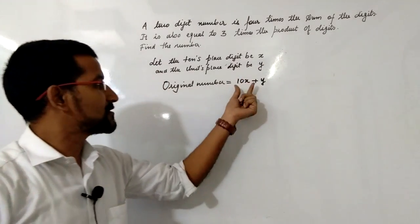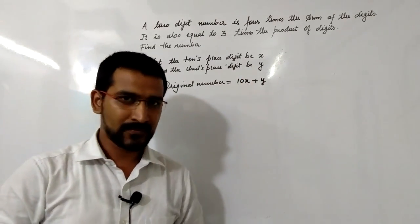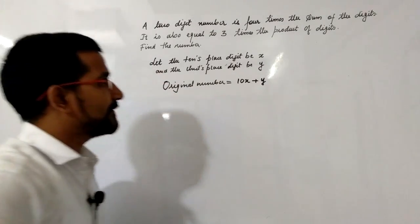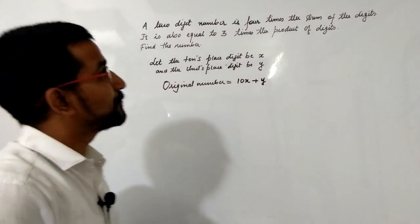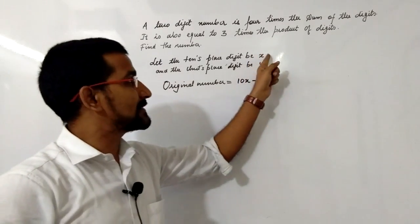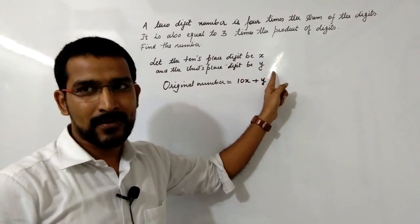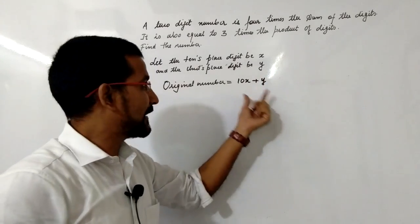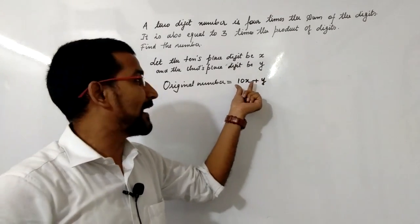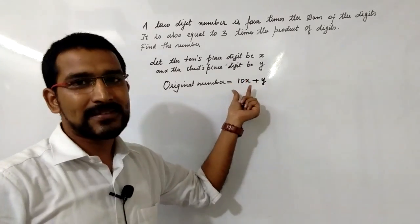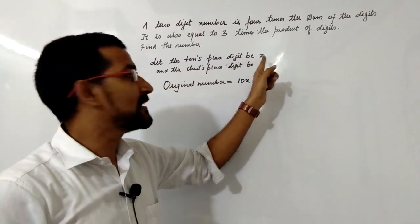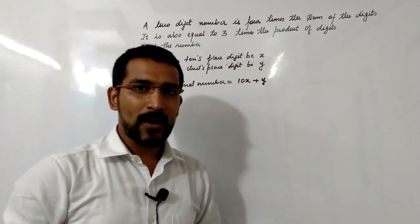So x and y are tens and units digits, giving us 10x + y. Now, many students think that 10x is a digit — no, 10x is not a digit, that is the value. 10 times x is the tens place value. The tens place digit is x and the unit place digit is y.